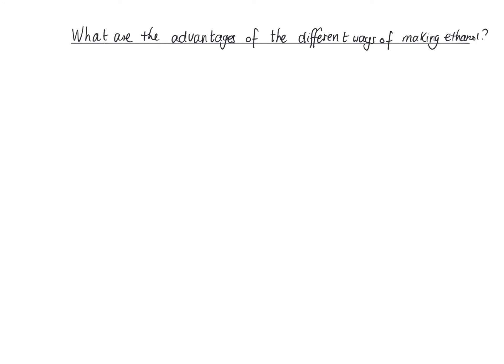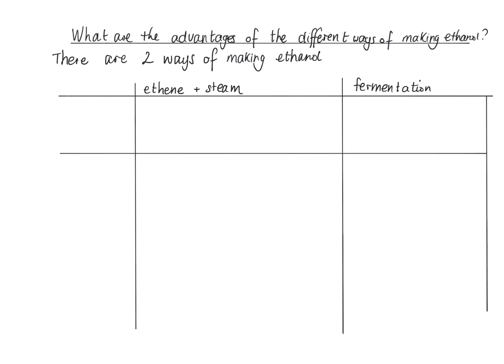What are the advantages of the different ways of making ethanol? There are two ways of making ethanol. There's the first way, which is ethene plus steam, and there's the second way, which is fermentation.